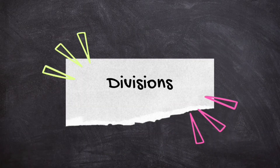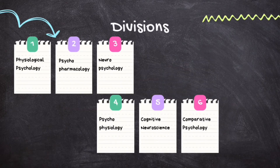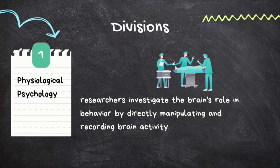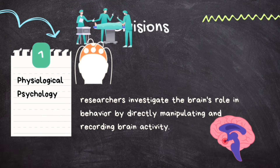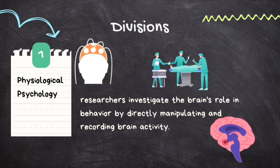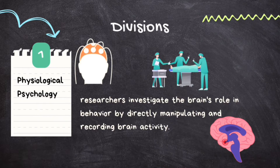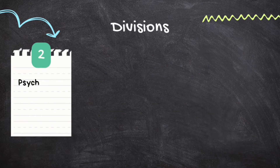Now let's understand the divisions. There are six divisions that make up biopsychology, each offering unique perspectives on the interplay between biology and behavior. The first is physiological psychology — a subdivision that studies the neural mechanisms of perception and behavior through direct manipulation of the brains of non-human animals in controlled experiments. Researchers investigate the brain's role in behavior by directly manipulating and recording brain activity, often involving surgical or electrical stimulation on animals to understand how neural processes steer our behavior.